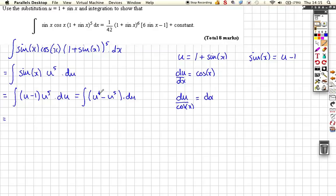That's just 1 7th increase the power by 1, divide by the new power. 1 7th u to the 7th minus 1 6th u to the 6th plus our constant of integration.